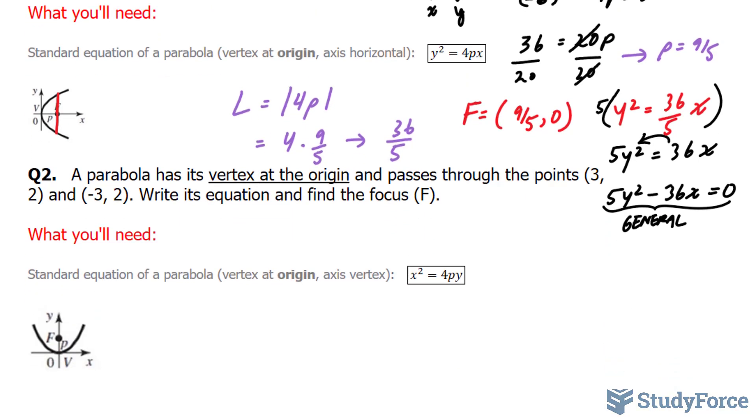In question 2, we have a parabola has its vertex at the origin and passes through the point (3, 2) and (-3, 2). Write its equation and find the focus. Now, they don't tell us whether its axis is vertical or horizontal. To find that out, you need to use a little bit of logic. We're told that it passes through (3, 2) and (-3, 2). Parabolas are symmetrical. So, if it has a vertical axis, as shown here, then it's going to have the same y twice. The y-coordinate for this point is 2 and the y-coordinate for this point is 2.